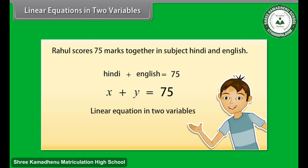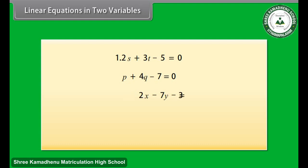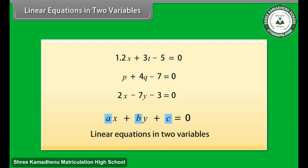Some other examples of linear equations in two variables are: 1.2S plus 3T is equal to 5; P plus 4Q is equal to 7; and 3 is equal to 2X minus 7Y. We can put these equations in the form: 1.2S plus 3T minus 5 is equal to 0; P plus 4Q minus 7 is equal to 0; and 2X minus 7Y minus 3 is equal to 0. So any equation which can be put in the form AX plus BY plus C is equal to 0, where A, B and C are real numbers and A and B are not both zero, is called a linear equation in two variables.